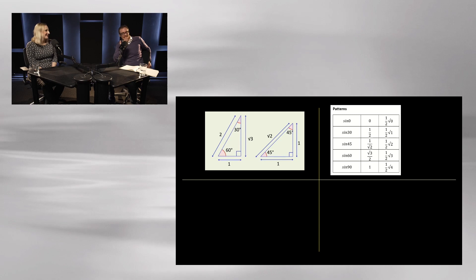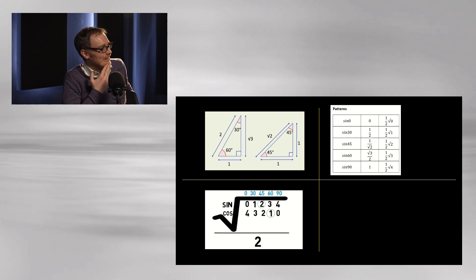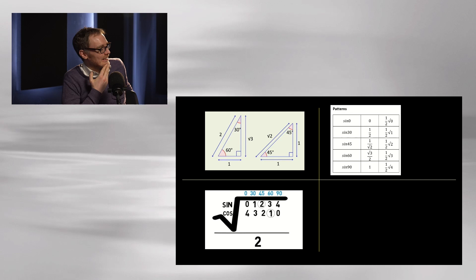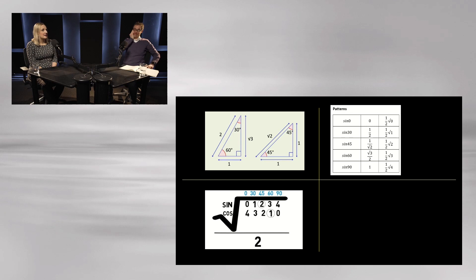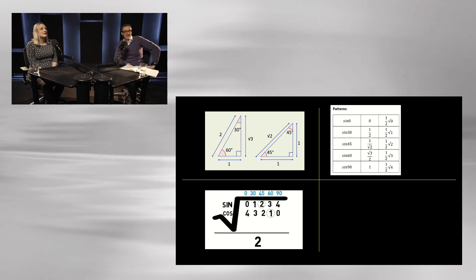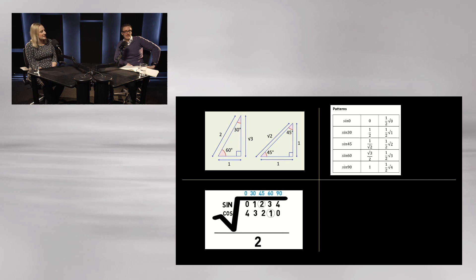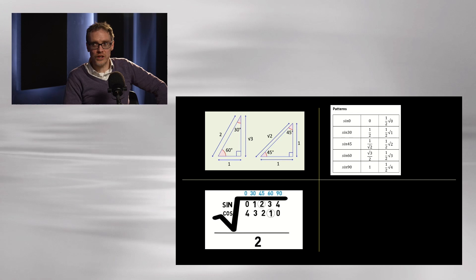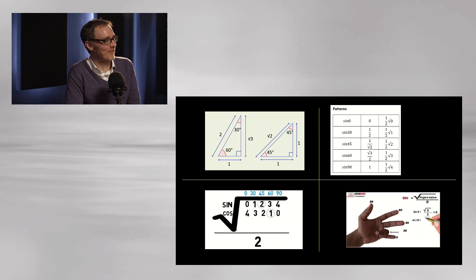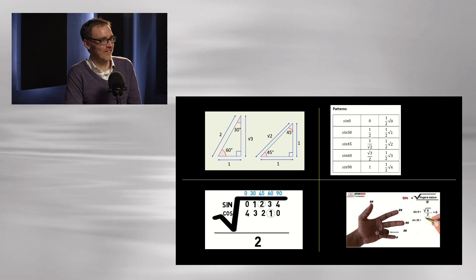Some people do this: write out 0, 1, 2, 3, 4 — then write 4, 3, 2, 1, 0 — do a big square root sign over the top, then write the whole thing over two. So sin 30 is the square root of one over two, and sin 90 is the square root of four over two, which is one. I can't imagine any teacher actually liking these things — it's too much to roll off the tongue, it's not like SOHCAHTOA. And then there's the hand trick — though even I forget the order: zero, 30, 45, 60, 90.